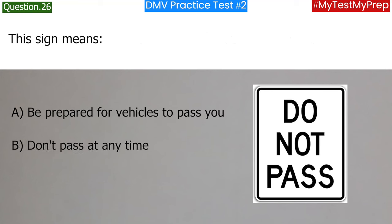When five or more vehicles are following you on a narrow two-lane road, you should: a. Speed up when they try to pass you; b. Pull off the road when it is safe and let them pass; c. Continue driving and ignore them. Answer: b. Pull off the road when it is safe and let them pass.